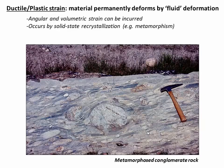The third type is ductile strain. This is when rocks are deformed in a fluid, continuous manner, and it can take the form of either angular or volumetric strain. Interestingly, it occurs by solid-state recrystallization — nothing actually breaks. Literally, bonds are just reconfigured, and we'll talk more about that later in the video.